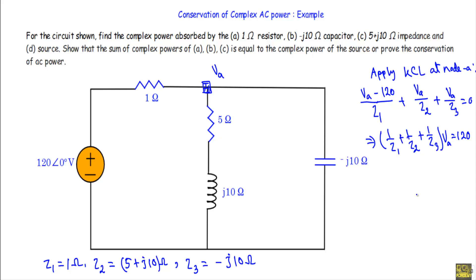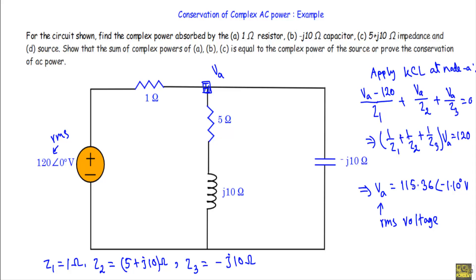Substituting the values of Z1, Z2, and Z3 and solving, we get Va equal to 115.36 at phase angle minus 1.10 degrees volt. Since the supply voltage is an RMS voltage, this Va is also an RMS voltage, and therefore all voltages and currents calculated from this node voltage or the source voltage will be RMS quantities. At this node we have Va = 115.36∠-1.10° V.